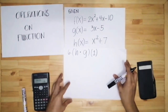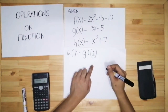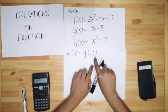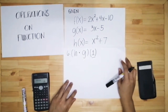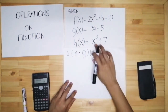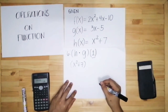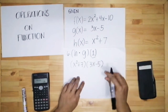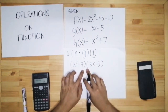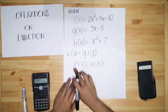Let's have the last example: the product of h of 1 and g of 1. We only have one value of x, which is 1. Therefore you will be using 1 for the value of x in both h and g. Write h of x as x squared plus 7 and g of x as 3x minus 5, placed side by side in parentheses to signify multiplication. Now change all x's to 1.